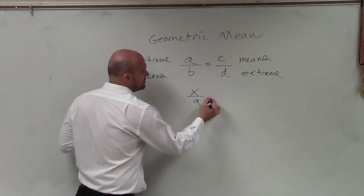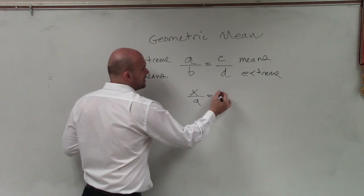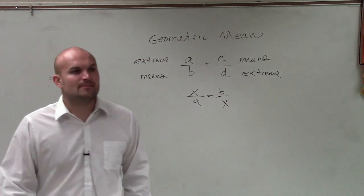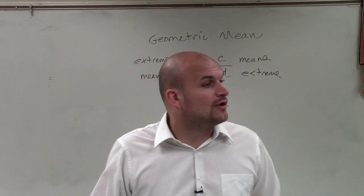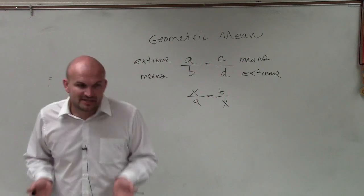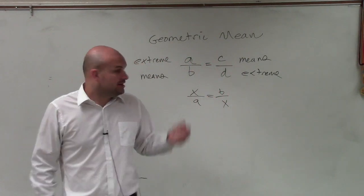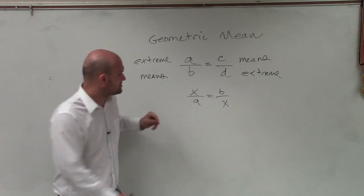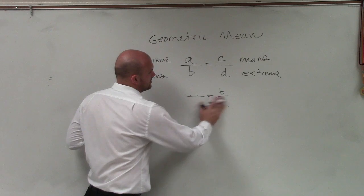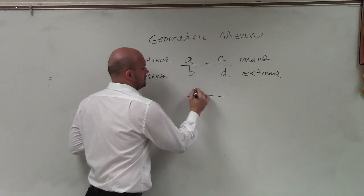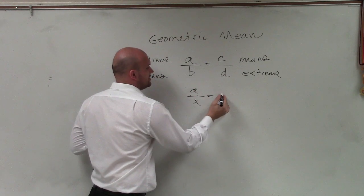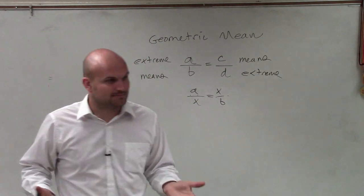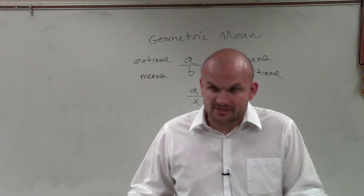Let's say I had a over x equals x over b. So what the geometric mean is — let's say I wanted to solve for x, which would be solving for the geometric mean. Because our means are exactly the same — they're both x.